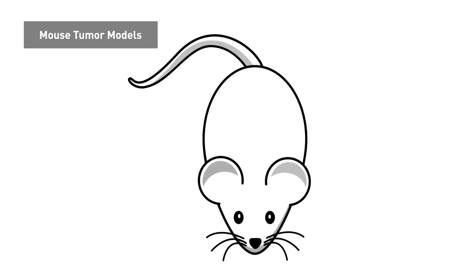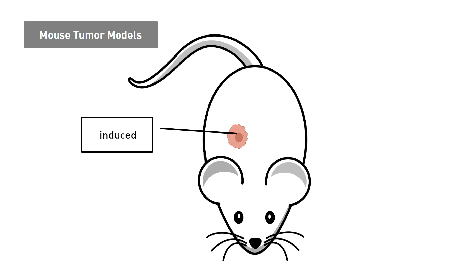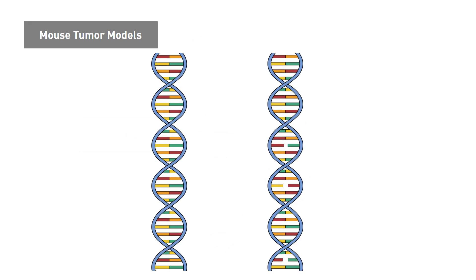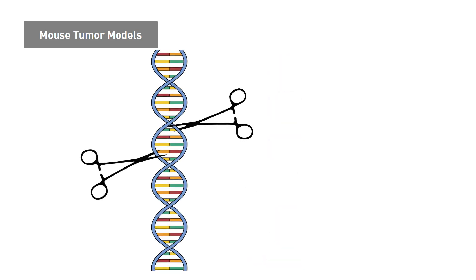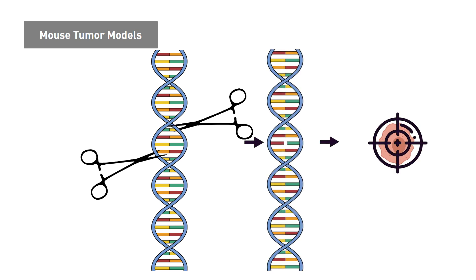New mouse tumor models can also be created by inducing a mouse to develop tumors either chemically or through genetic engineering techniques. Chemically induced tumors cause random mutations that can occur anywhere in the genome in order to discover genes that aren't already known to be involved in tumor formation. Genetic engineering methods can induce tumors in very specific locations in the genome or can be targeted to induce tumors in a specific cell or organ type.